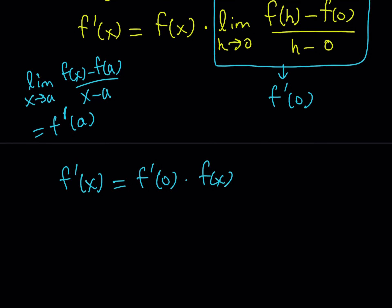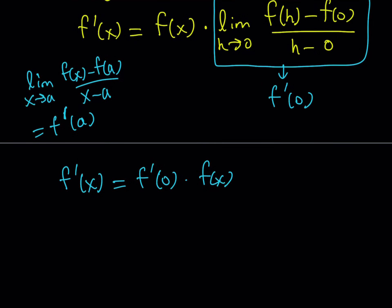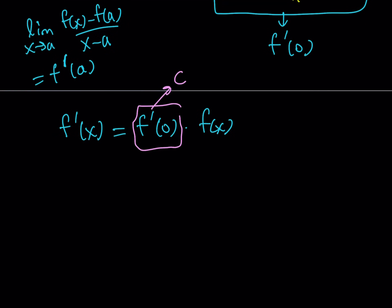Since f prime at 0 is a constant — we're evaluating the derivative, which is a function since f is differentiable, so it gives a constant value — let's replace f prime at 0 with c. Then our equation looks like f prime of x equals c times f of x. This is great because we've found that the derivative of f is a multiple of f, which is really cool. At this point we can turn this into a differential equation and solve by integration, then determine the constant c if possible.